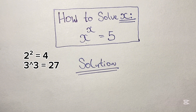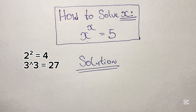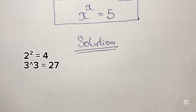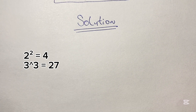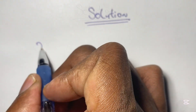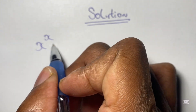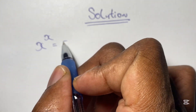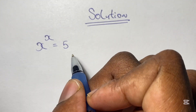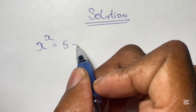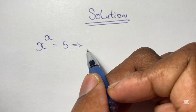Given that 2 squared equals 4 and 3 cubed equals 27, it's obvious that our solution for x is 2 point something. Let us look at how to solve our equation — we have x to the power of x equals 5.